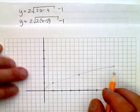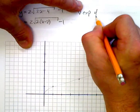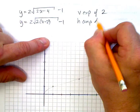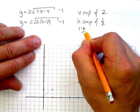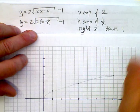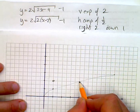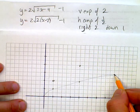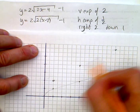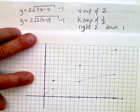What's happened here: there's a vertical expansion of 2, a horizontal compression of one half, then a slide right 2 and down 1. The vertical expansion of 2 means the y-values double — so (1,1) jumps to (1,2), (4,2) jumps to (4,4), and (9,3) jumps up to (9,6). That's the vertical expansion of 2.